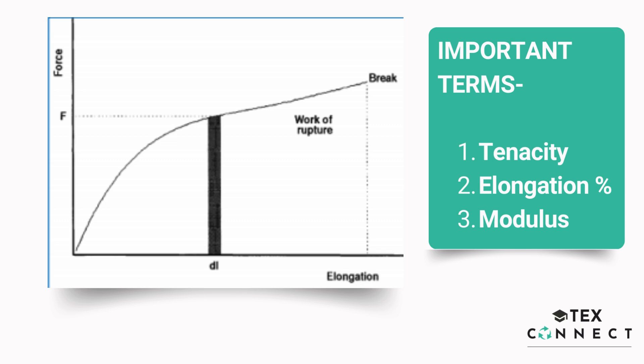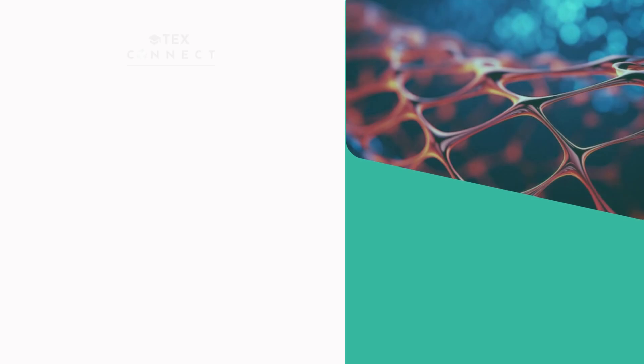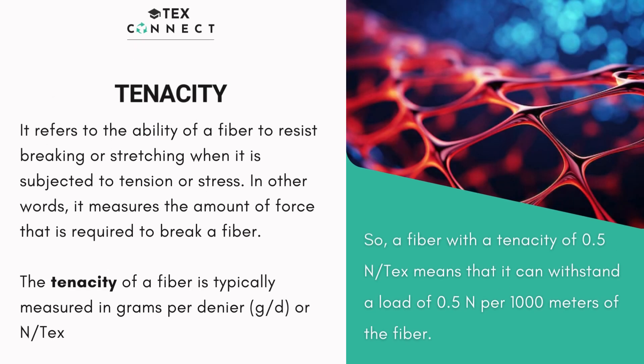There are a few important terms: tenacity, modulus, and elongation percent. Tenacity is the force that a fiber can withstand before finally breaking. It is measured in grams per denier or newton per tex. Tex is the count of fiber — that is, the weight of fiber per thousand meters. If a fiber has a tenacity of 0.5 newton per tex, it can withstand a load of 0.5 newton per thousand meters of its length.